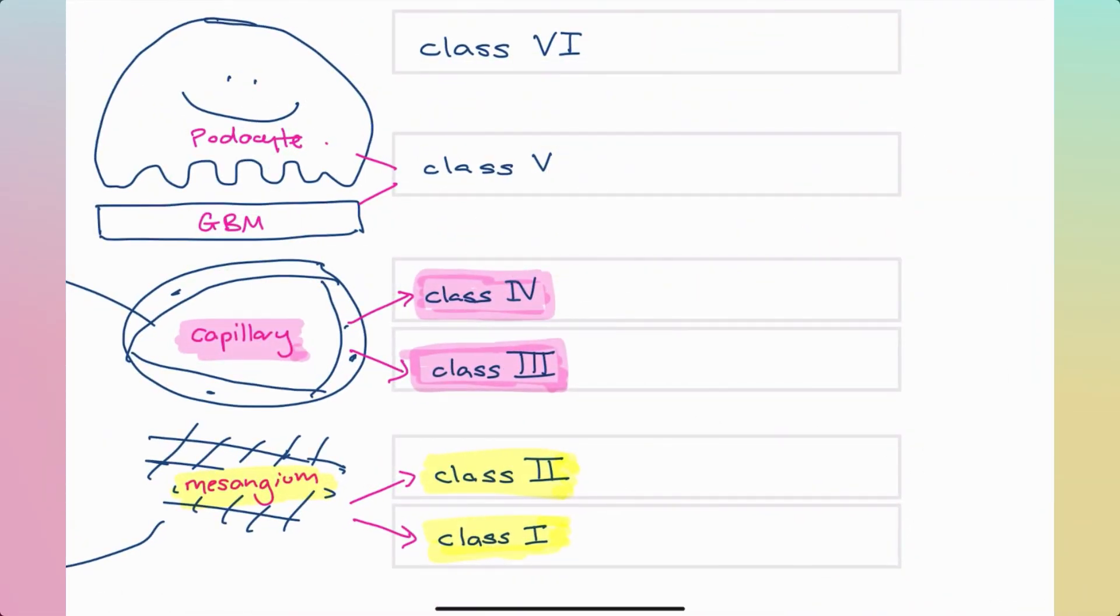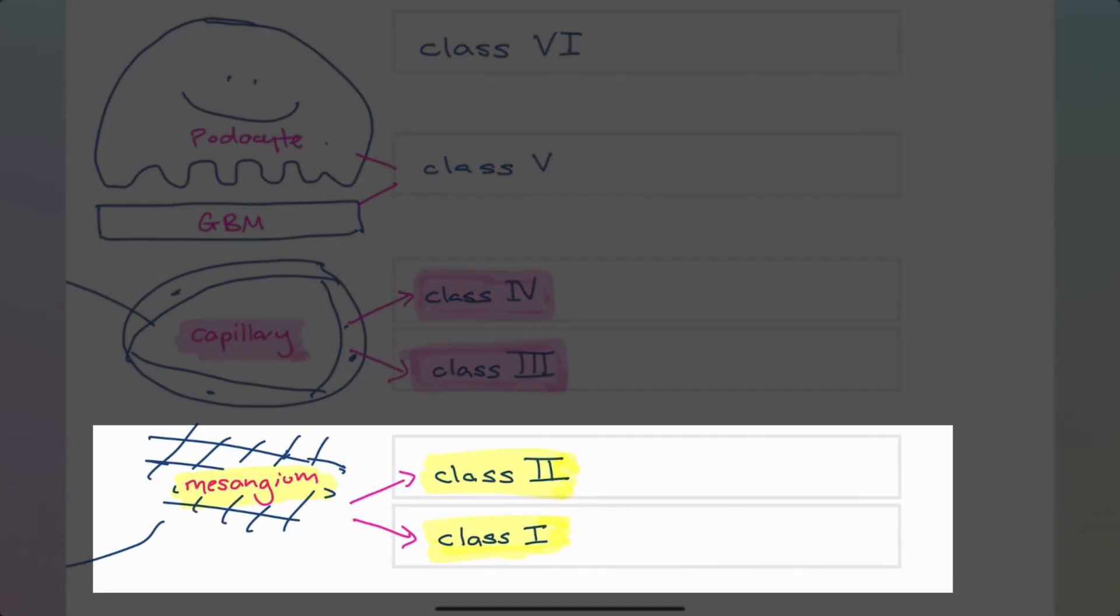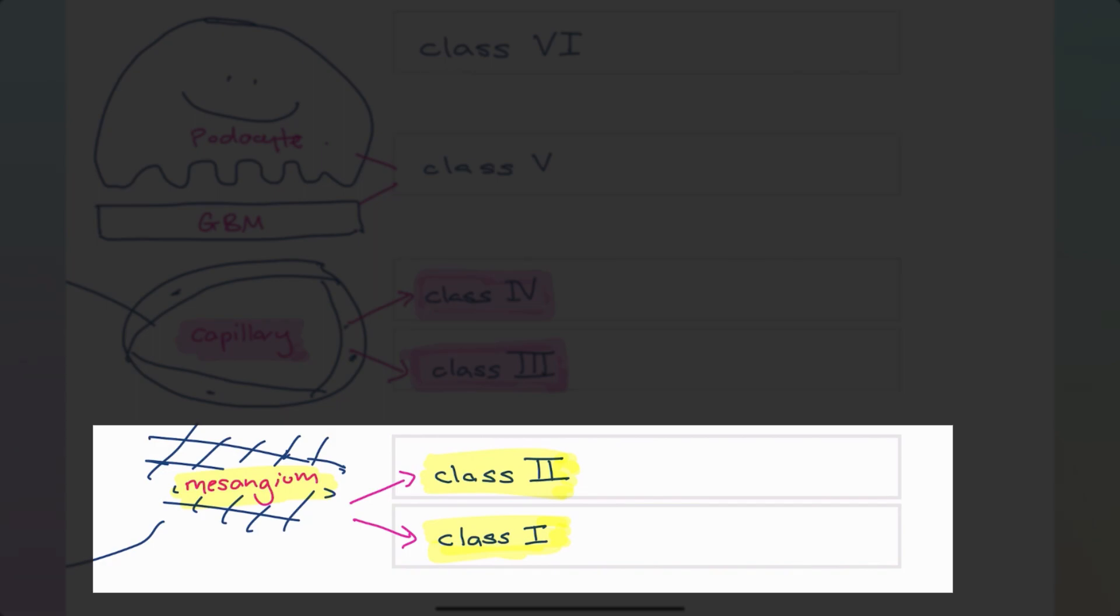Coming back to apply this to class one and two lupus nephritis, these cases only involve the mesangium. In class one, also known as minimal mesangial lupus nephritis, the biopsy looks completely normal under the microscope. But when you stain the biopsy, you'll find immune deposits are there in the mesangium.